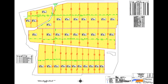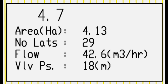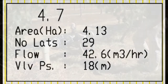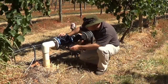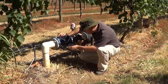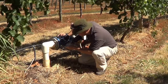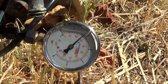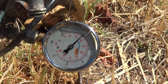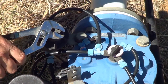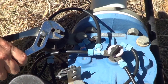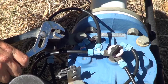It is good if you have an irrigation design to work from. Check what the valve pressure should be according to the design. In this situation it is 18 metres or 180 kPa. As we can see, this valve is running at the correct pressure. If it wasn't, we could adjust the pilot to increase or reduce the operating pressure.